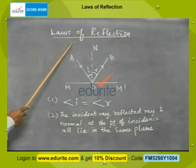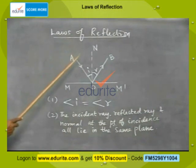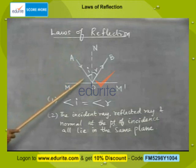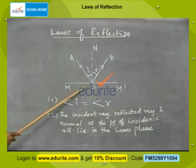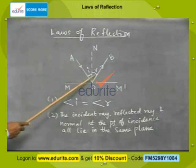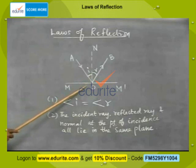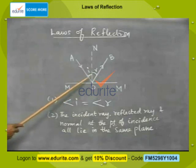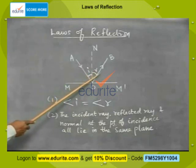Laws of reflection. When light falls on a transparent surface, partly it is reflected, another part is transmitted, and the rest of it is absorbed. The reflected part obeys the laws of reflection.